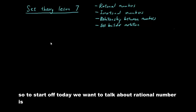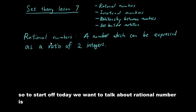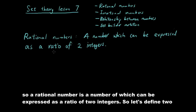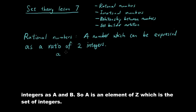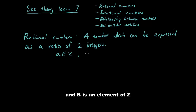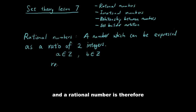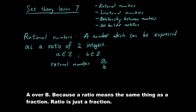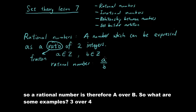To start off today we want to talk about rational numbers. A rational number is a number which can be expressed as a ratio of two integers. So let's define two integers as a and b, where a is an element of Z (the set of integers) and b is also an element of Z. A rational number is therefore a over b, because a ratio means the same thing as a fraction.